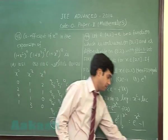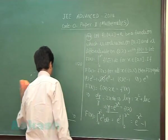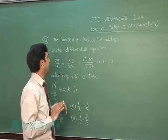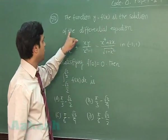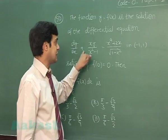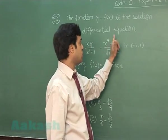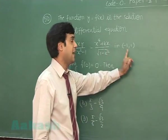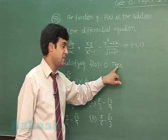Let's move to the next one. Okay, now turn for question number 50. The function y equals f(x) is the solution of the differential equation dy/dx plus xy upon (x² minus 1) equals (x⁴ plus 2x) divided by root(1 minus x²) in (-1,1). Satisfying f(0) equals 0.